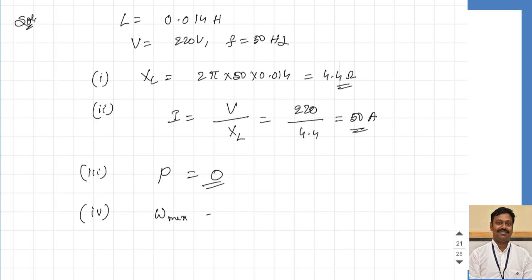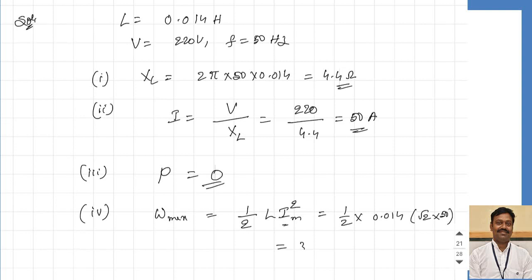For the third part, the power consumed: we know the average power consumed by an inductor is zero. For the fourth part, the maximum energy stored: in DC the energy stored is half L into I-squared. In AC the current is continuously varying, so maximum energy is stored when current is maximum: half L into I-maximum squared equals half into 0.014 into (root-2 times 50) squared, which gives 35 joules.